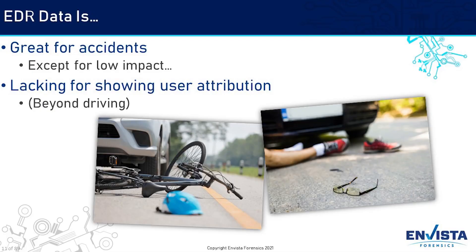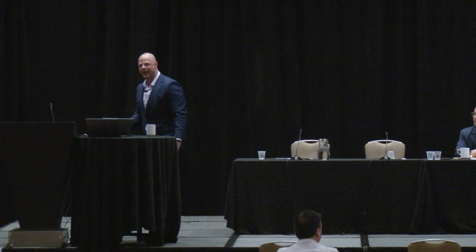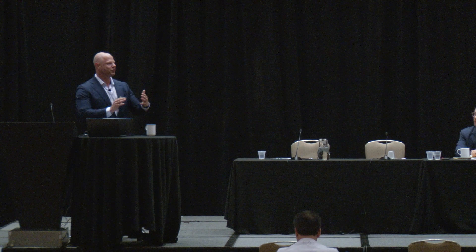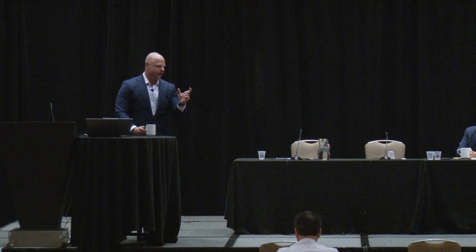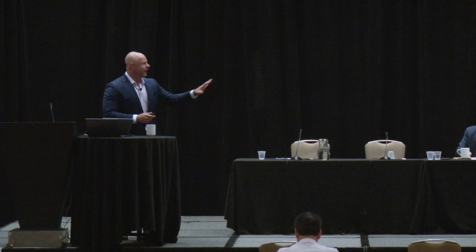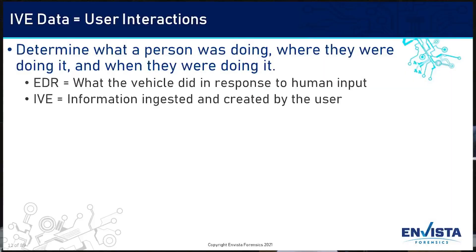One quick thing to note: with an EDR, if the impact is too low — say you hit a pedestrian or a bicycle — it may not record in the event data recorder. But it can record data related to that inside of an in-vehicle infotainment telematic system, because that system records data for long stretches of time. It's not as granular as EDR accident data, which captures about five seconds before or after, but the IVE system records a lot of data useful for lifestyle analysis — patterns of driving activity, where they go, and so forth.